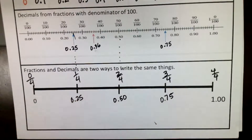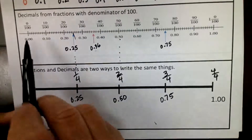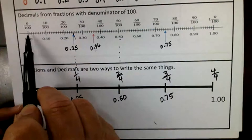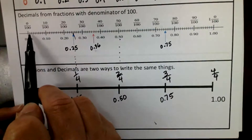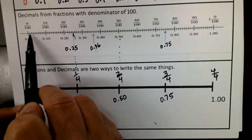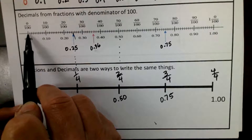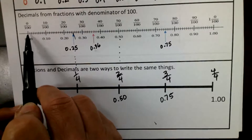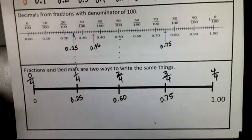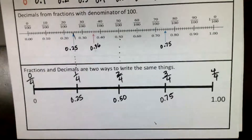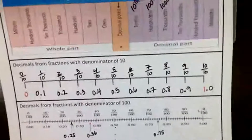If you think about a thousandth — if that's a hundredth right there, that little piece right there — a thousandth would have ten pieces in between those two little pieces. A thousandth is a tiny little piece. Let's keep going.